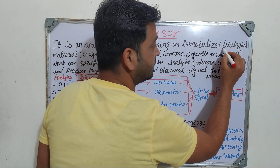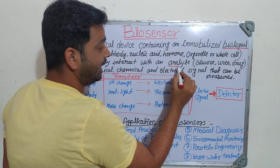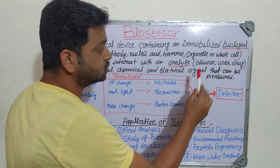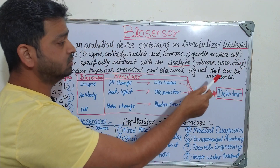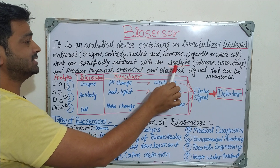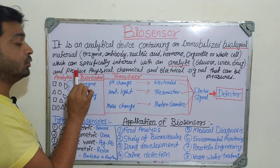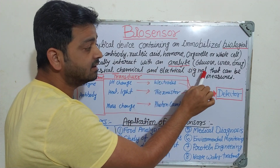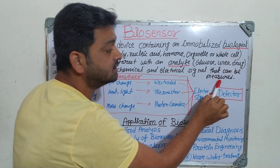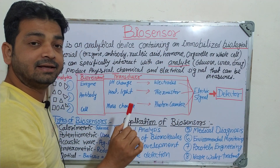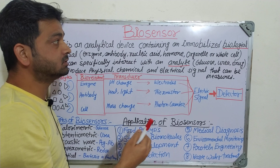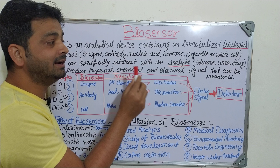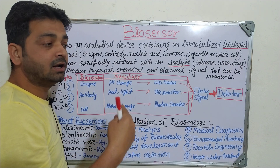The two key components are the biological material and the analyte. The analytes may be glucose, urea, or any drug molecules. The interaction between them produces physical, chemical, or even electrical signals that can be measured. This gives an indication of what is happening — the sensor senses the interaction and provides a signal.